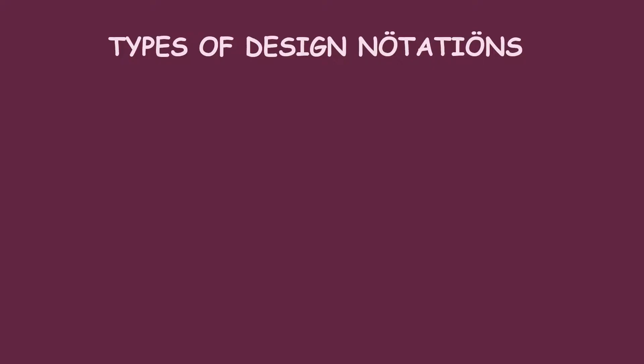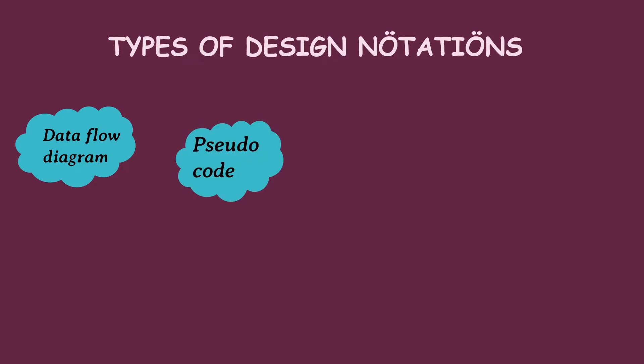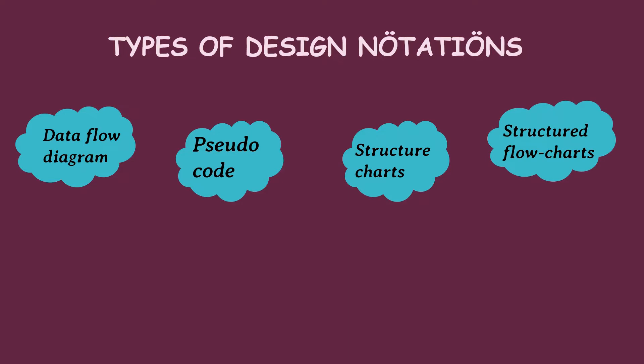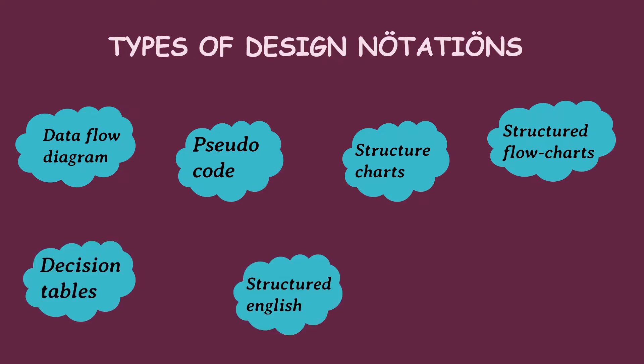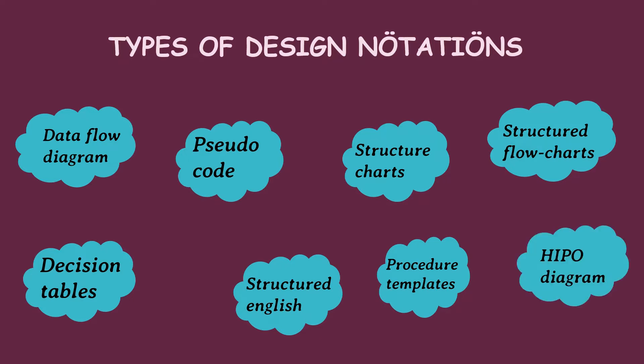Types of design notations include: Data flow diagram, Pseudocode, Structure charts, Structured flowcharts, Decision tables, Structured English, Procedure templates, and HIPO diagram. Now, let's take a look into them.